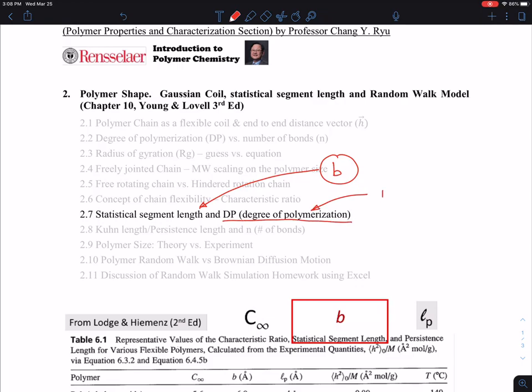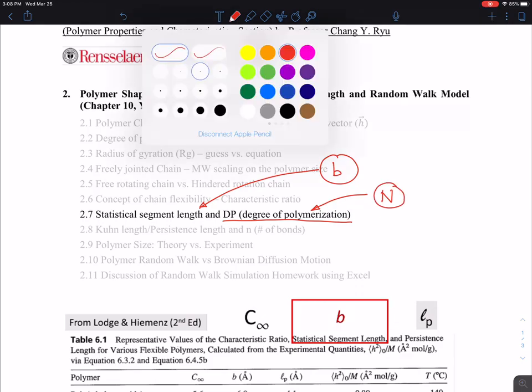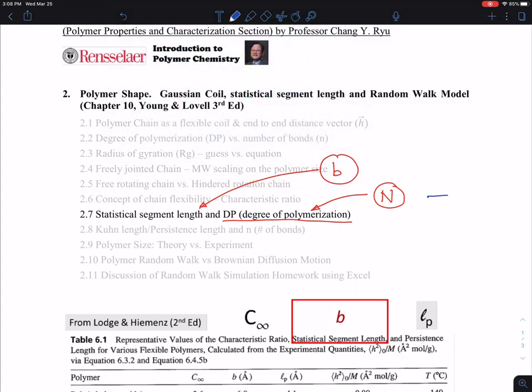And the degree of polymerization is a DP I've been using it. For now, I'm going to use a big N as a substitute. So you might recall from the previous lecture, this is related to number of bonds and the small n. And this is a length scale, so this is somewhat related to bond lengths. But how does statistical segment length come into play?